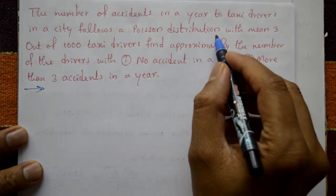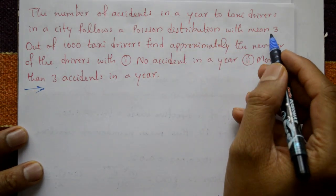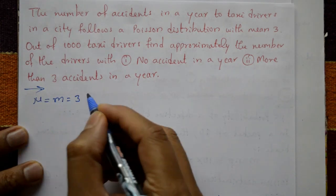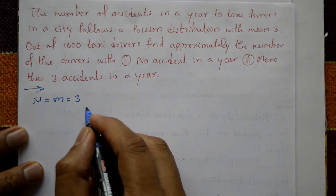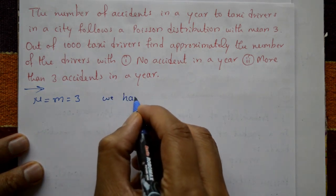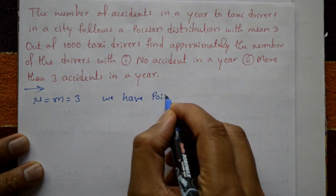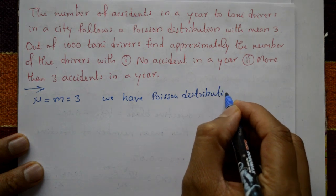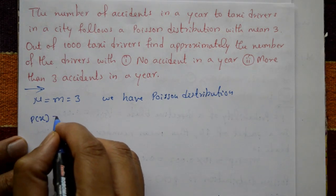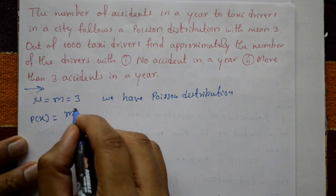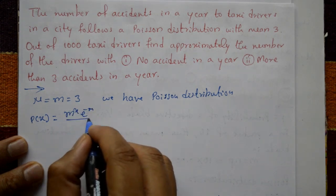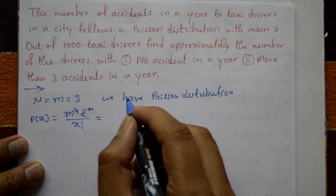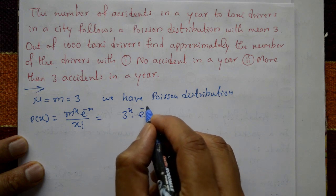The Poisson distribution has mean m equal to three. The Poisson distribution formula is P(x) equals m raised to x, multiplied by e raised to minus m, divided by x factorial. Substituting m equals three: P(x) equals three raised to x, multiplied by e to the power minus three, divided by x factorial.